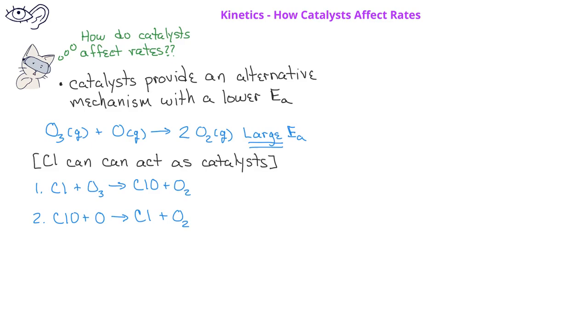Overall, we still have ozone reacting with monatomic oxygen to produce 2O2, but with chlorine acting as a catalyst. We can also look at catalysts in terms of an energy diagram.